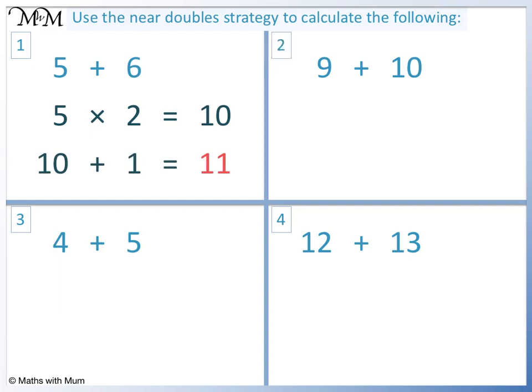Question 2. We double 9. 9 times 2 equals 18. 10 is 1 more than 9, so we add 1. 18 add 1 equals 19.